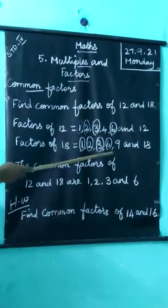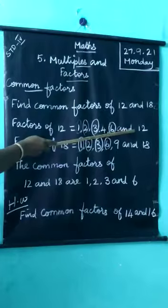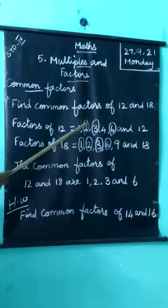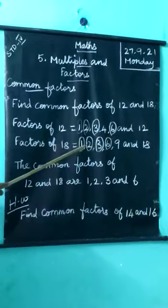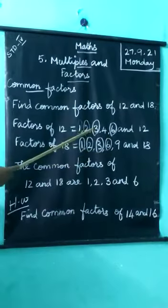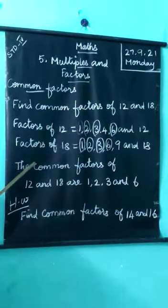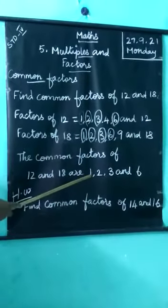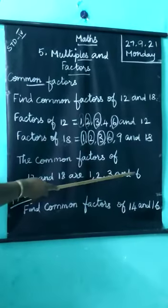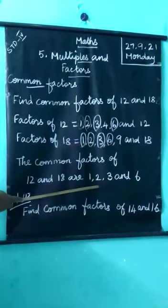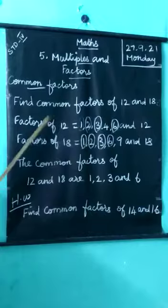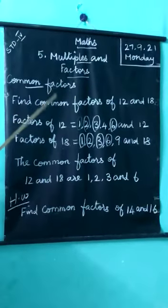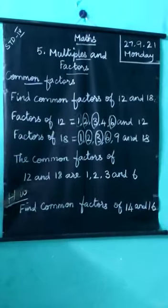Understand children. So common factors, this is common factors in both numbers. Understand children. So common factors of 12 and 18 are 1, 2, 3 and 6. Circle the numbers we have to write. Understand children. These are the common factors of the given numbers.